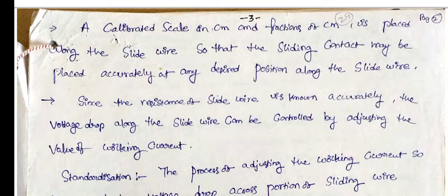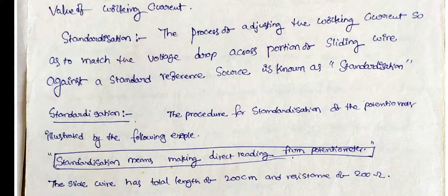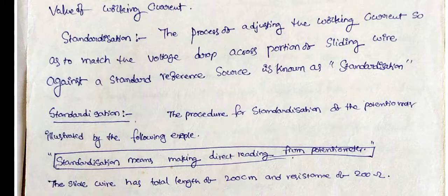Since the resistance of the slide wire is known accurately, the voltage drop along the slide wire can be controlled by adjusting the working current. Before measuring unknown voltage, standardization must be performed. Standardization is the process of adjusting the working current so that the voltage drop across the slide wire equals the standard reference voltage. When the standard cell voltage equals the voltage drop across the resistance, the galvanometer shows null condition and standardization is complete.